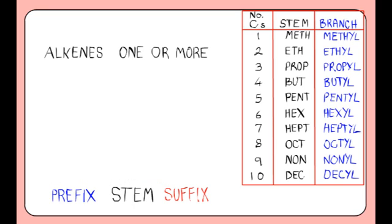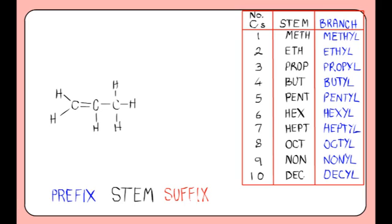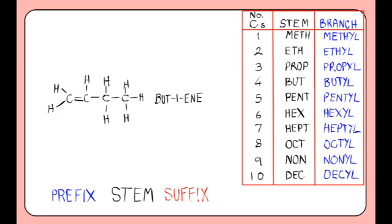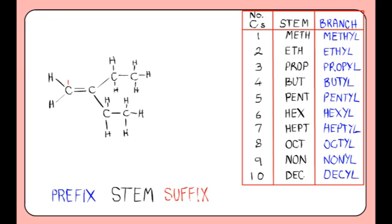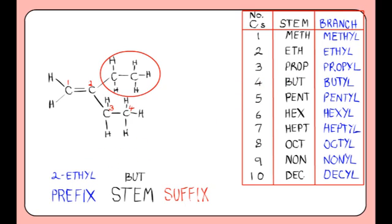Alkenes are hydrocarbons with one or more carbon-carbon double bond. You name these in the same way as alkanes. The difference is the suffix will be '-ene' rather than '-ane'. Also, in cases where the double bond can go in more than one place, you need to state its position. For example, with propene the double bond can only go in one place, so you don't have to state its position. However, with butene, the double bond can be in position 1, giving but-1-ene, or in position 2, giving but-2-ene. Working through an example: the longest carbon chain is 4, so the stem is 'but'. It has an ethyl group on position 2, making the prefix 2-ethyl. It has a double bond on carbon 1, so the suffix is '-1-ene'. Note, you state the carbon with the lowest number. So we have 2-ethylbut-1-ene.